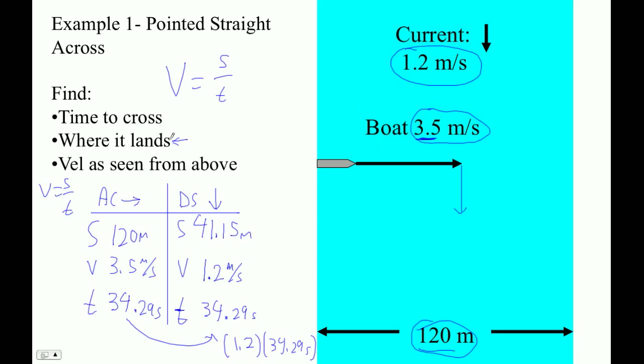We have two sig figs. So the time it takes to cross is 34 seconds. Where it lands is 41 meters downstream.